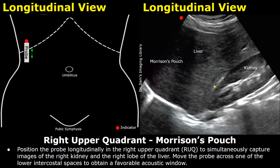Next, position the probe longitudinally in the right upper quadrant to capture images of the right kidney and the right lobe of the liver. This is a longitudinal plane, so the indicator is towards the head of the patient. You can move the probe across one of the lower intercostal spaces to remove rib shadows. The region of interest is Morrison's pouch — the potential space between the right lobe of the liver and the right kidney. The pleural space and diaphragm are also visible, and fluid may be found below the diaphragm or as pleural fluid in case of pleural effusion.